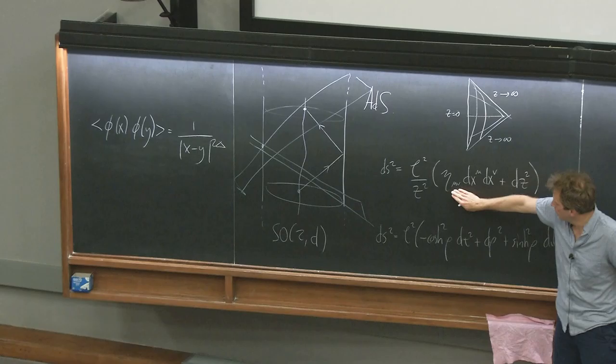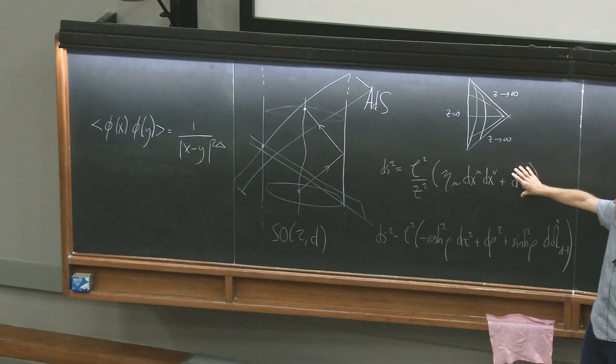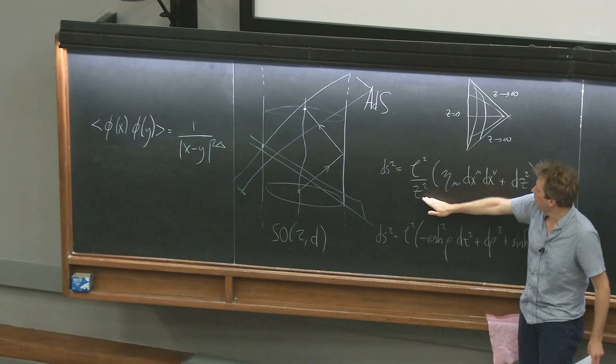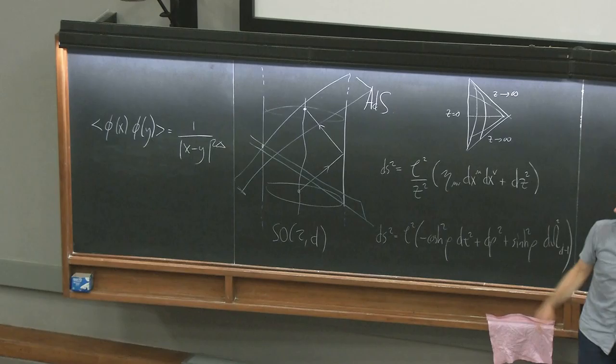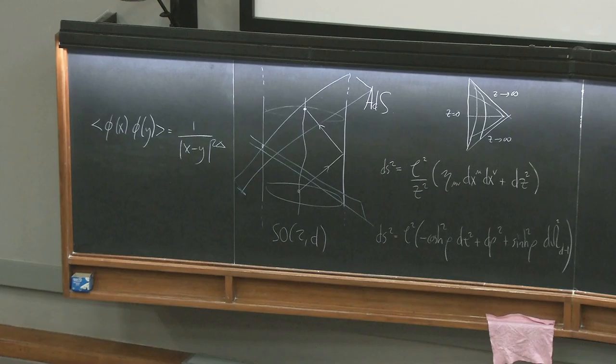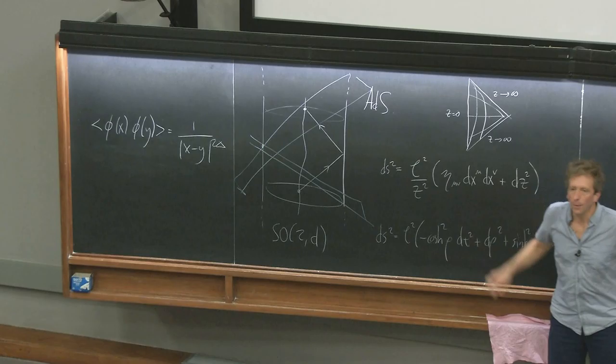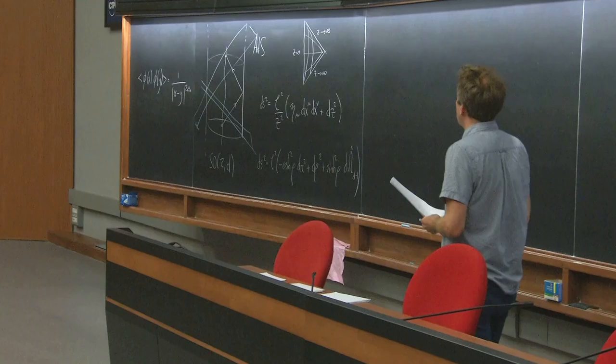In terms of a Penrose diagram for this space, it's not a complete space. The boundary lives at Z equals zero — the conformal boundary — but we also have some Cauchy horizons associated to these null wedges. You can continue out perfectly happily, but from the point of view of field theories, this is a natural coordinate system to use.